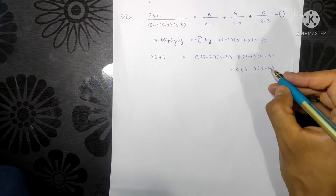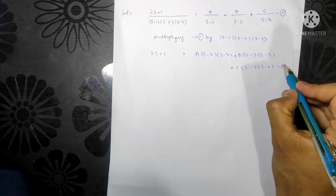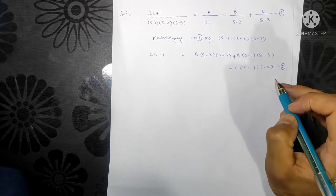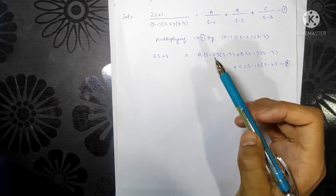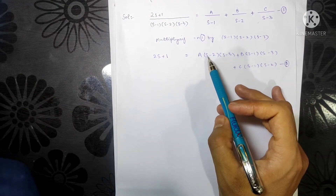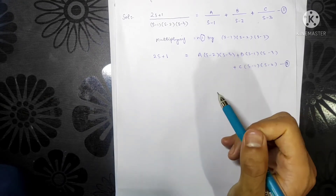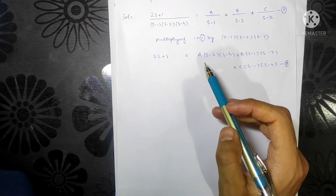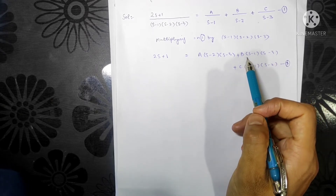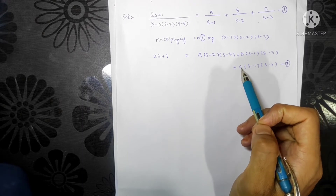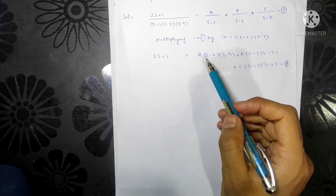Let me name this as Equation 2. The most important step is we need to give specific values of s to find A, B, and C. If we put s equal to 1, the B term and C term both become zero because (s minus 1) makes them vanish, and we are left with just A.